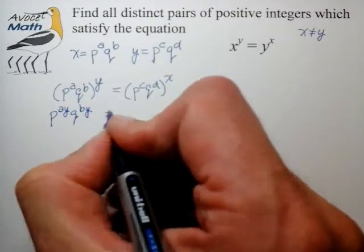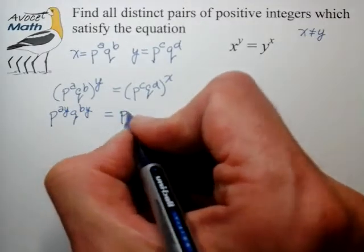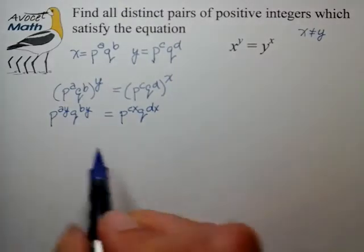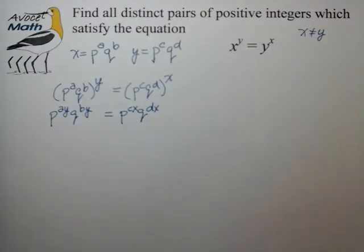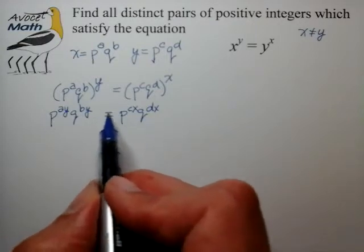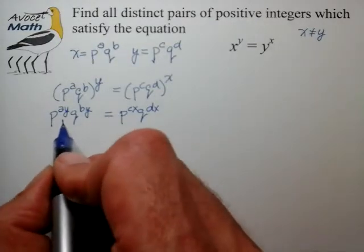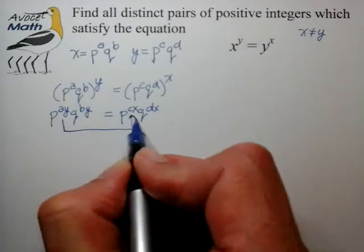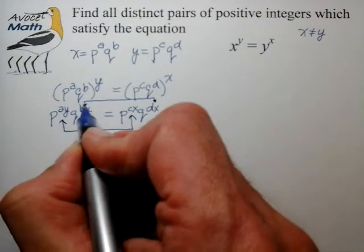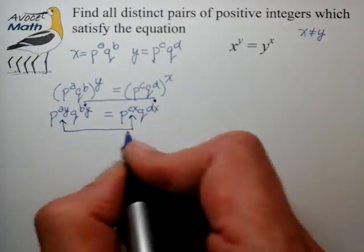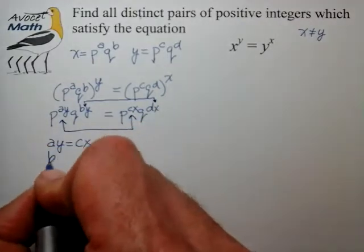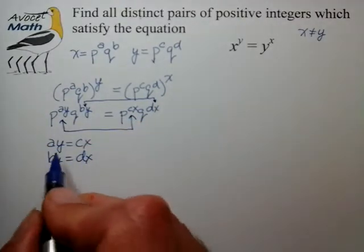y is equal to p to the c, x, q to the d, x. And now we have a very good handle on what's going on here. We know that since the prime number bases are the same, in order for this equality to hold, we know that the exponents have to match up as well. So from that we can write the equation that a, y has to equal c, x and b, y has to equal dx. So now,